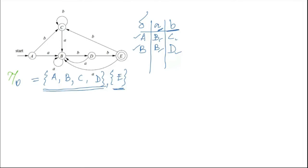So let's check for A and C. On state C, if you give A, it goes to B, and if you give B, it has a self-loop, it iterates on C. So you can say that A and C are similar, and they are already in the same group, so there is nothing to split.